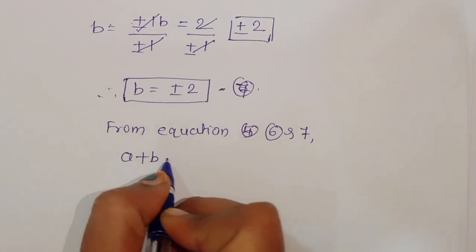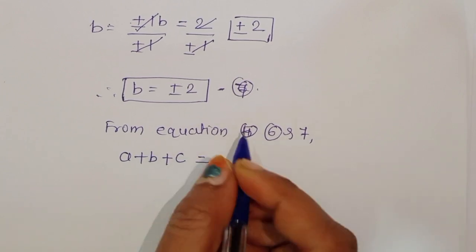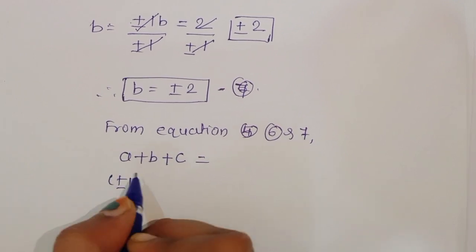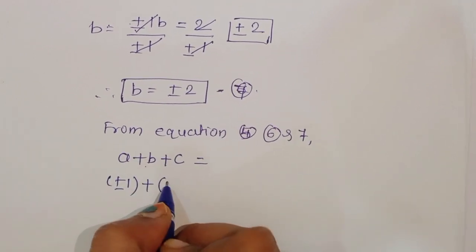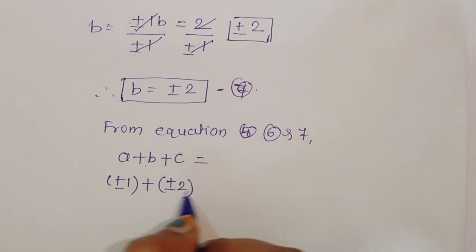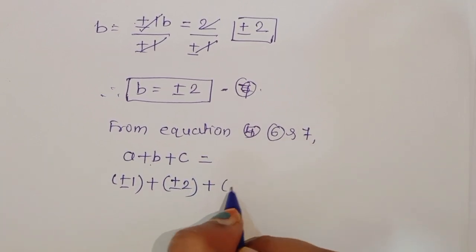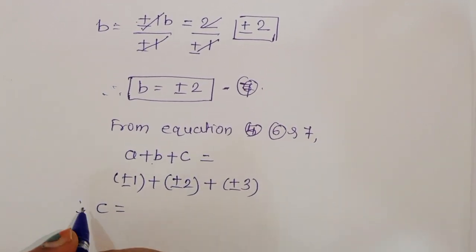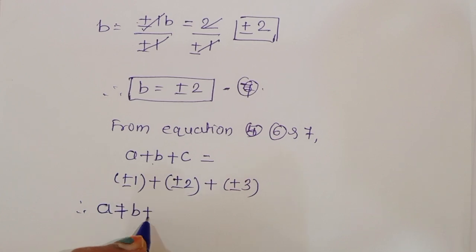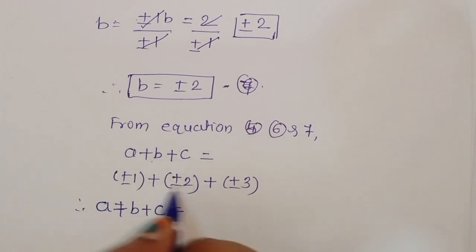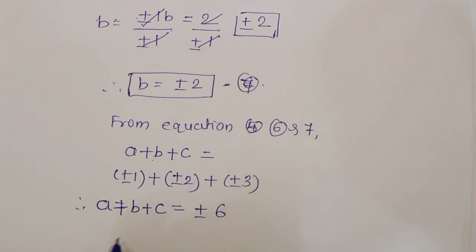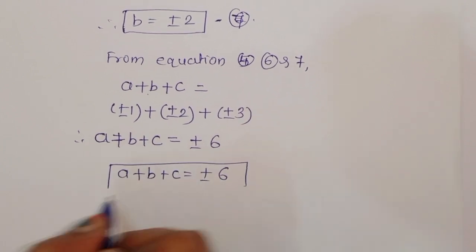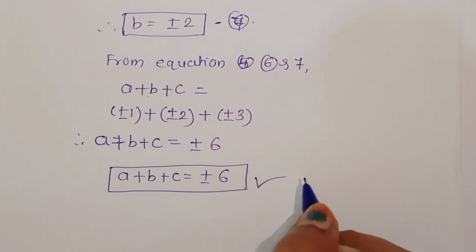We will get A plus B plus C is equal to: the value of A is plus or minus 1, plus the value of B which is plus or minus 2, plus C which is plus or minus 3. Therefore A plus B plus C is equal to plus or minus 6. This is the final solution. Thank you.